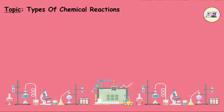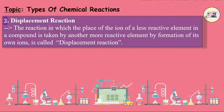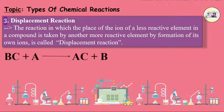Third, displacement reaction. The reaction in which the place of the ion of a less reactive element in a compound is taken by another more reactive element by formation of its own ions is called displacement reaction. It can be simply remembered as BC plus A produces AC plus B.